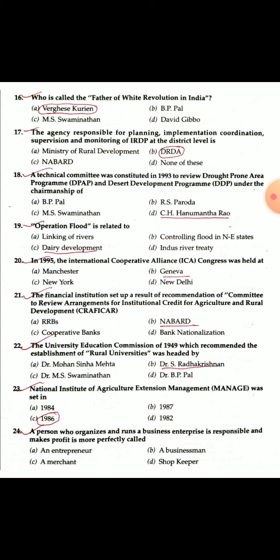Question 21: The financial institution set up as a result of the recommendation of the committee to review arrangements for institutional credit for agriculture and rural development — CRAFICARD — was the basis on which NABARD was established in 1979.